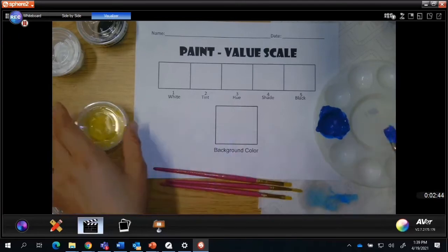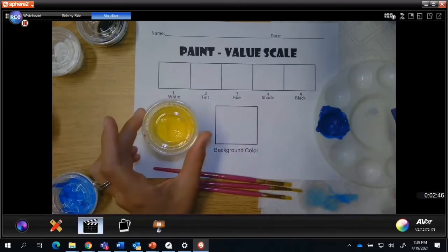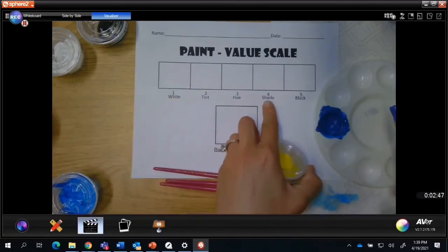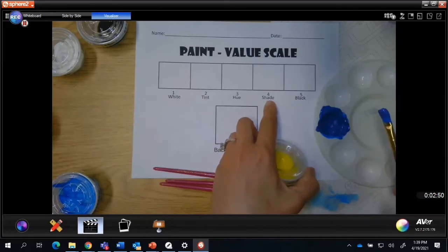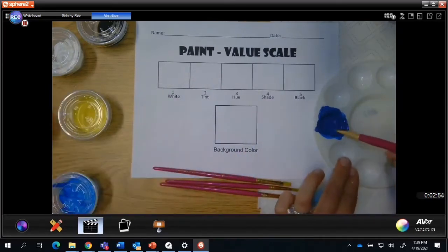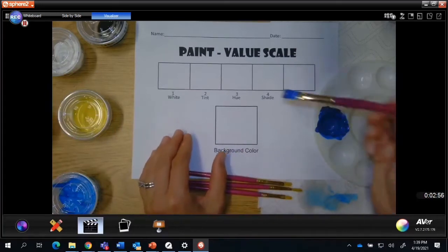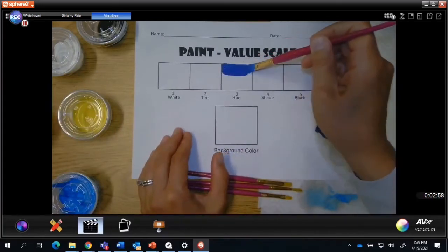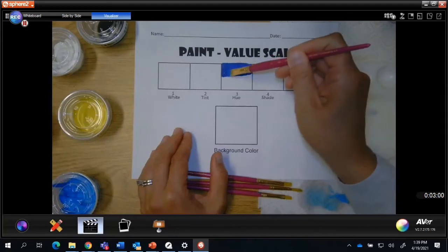If you're using the color yellow, I would suggest that instead of using straight black for your shade, you actually mix gray to shade your color. So I have my hue mixed here, and I'm going to start by painting that right here in my number three.